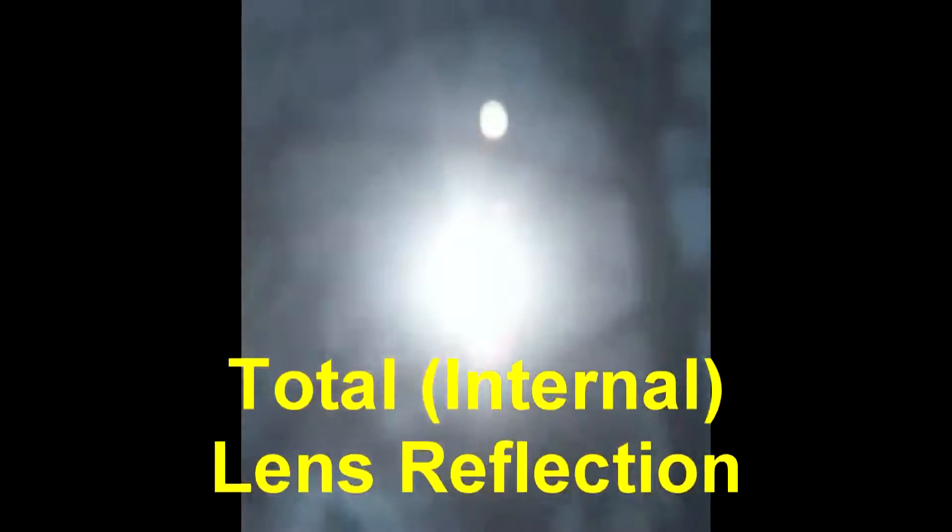Here's another example of a different kind of anomaly called a total lens reflection, or internal lens reflection. Some people call it a ghost image. It's kind of typical of a flare, but when you move the camera around it tends to stay in the same spot. It's actually the same thing as a lens flare — all that light is bouncing around inside the camera, reflecting off a lens and back onto the sensor, creating a second image of the Sun. If you block out the Sun, that goes away.